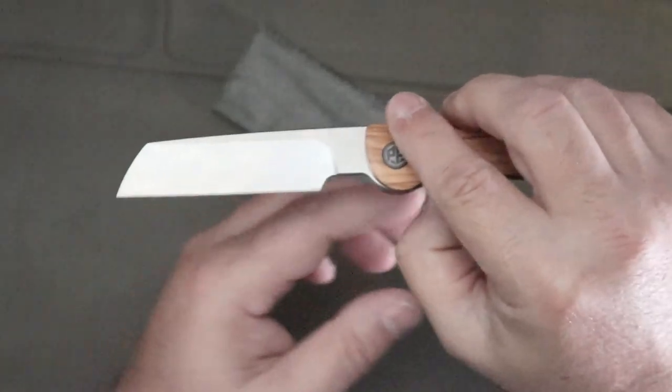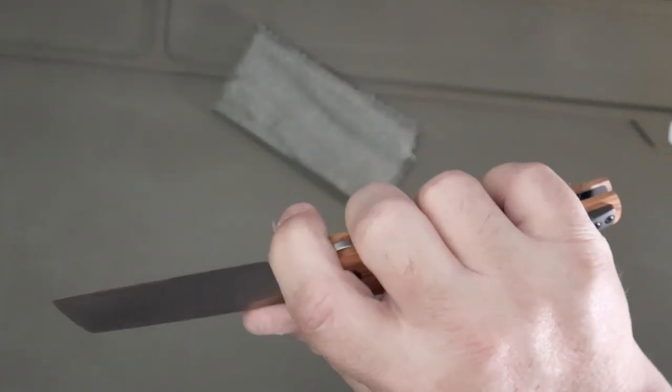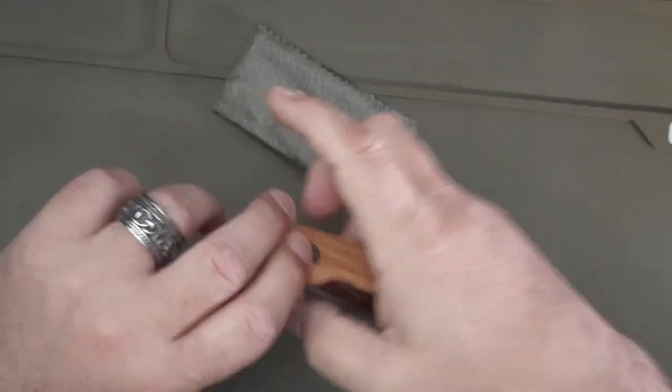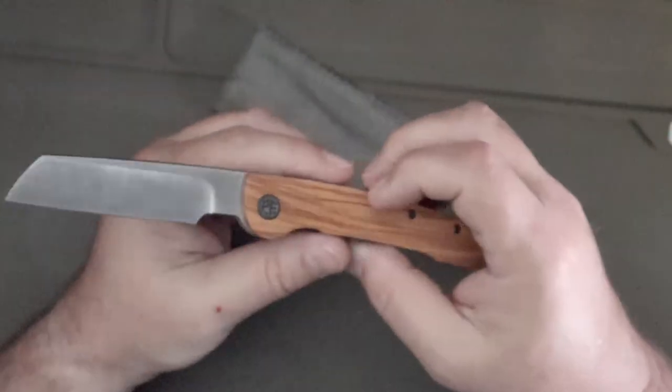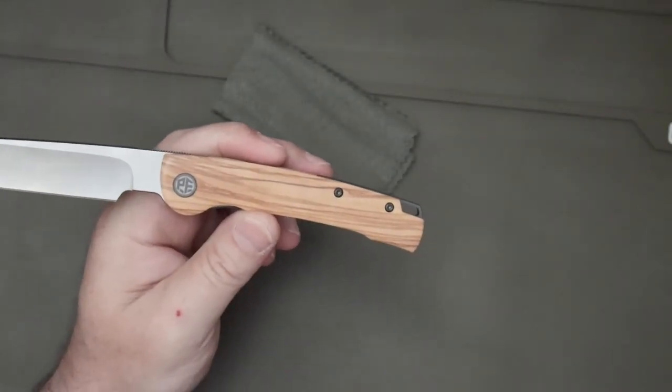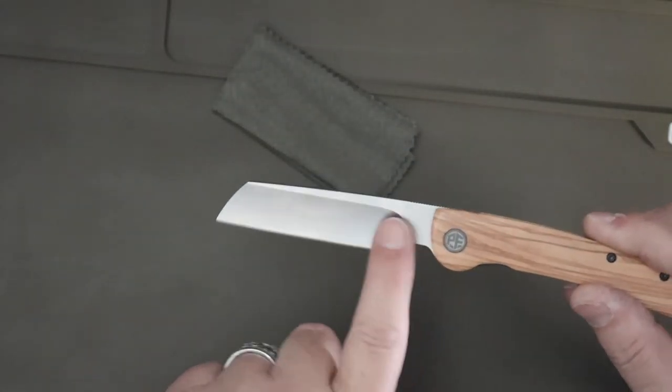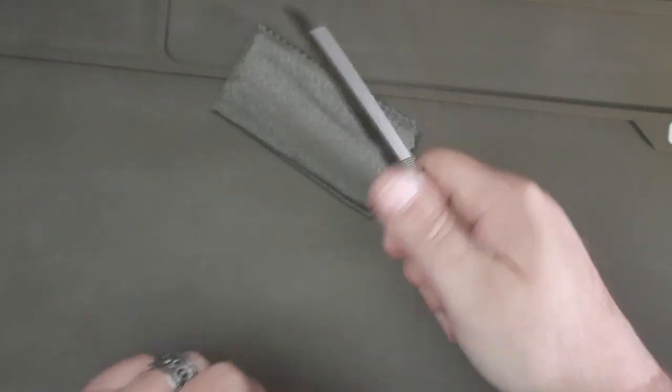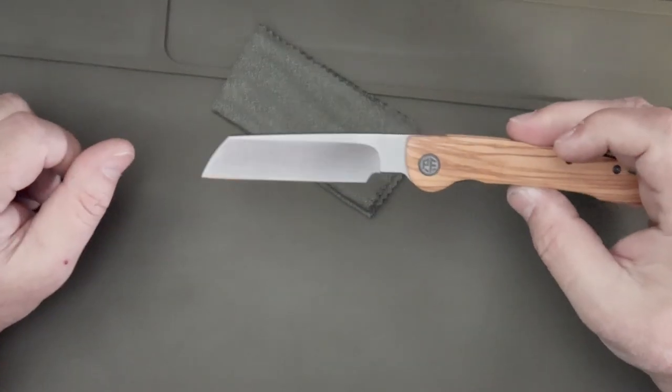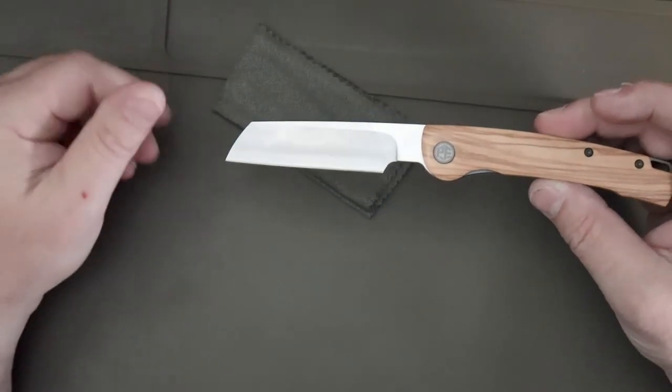You got a nice sharpening choil right here, you can also choke up on it. That is unbelievably sweet. I mean you're looking at a 3.7 inch blade, about 4.5 inch handle, looking at just over 8 inches all together. It is a rock solid little knife.